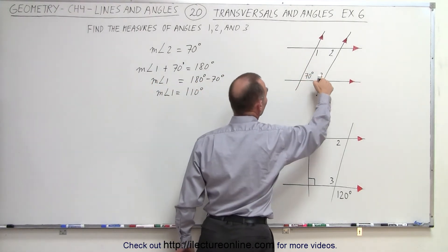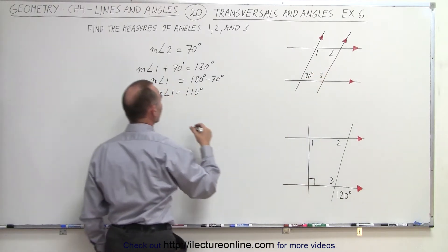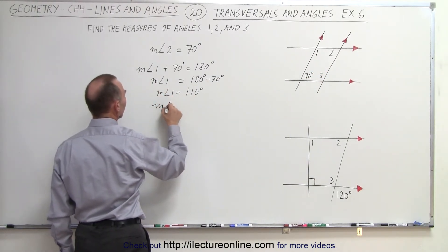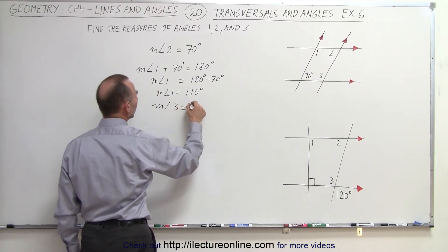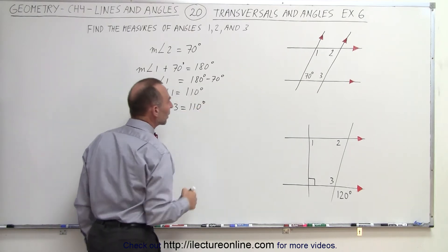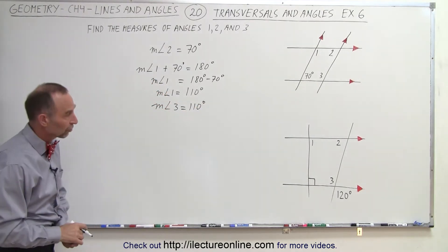Now that we have the measure of angle 1, and we have angle 3 here, we know that these are alternate interior angles, so therefore we can claim that the measure of angle 3 must also equal 110 degrees, because they must have equal measures.